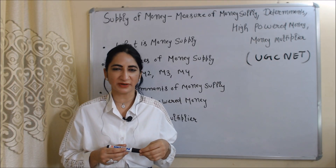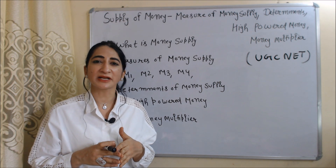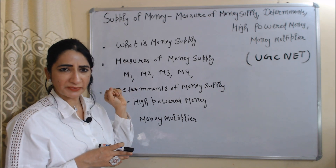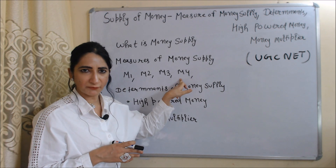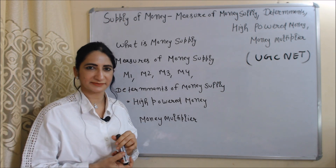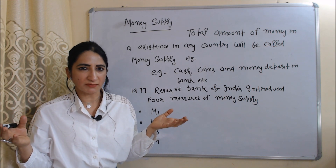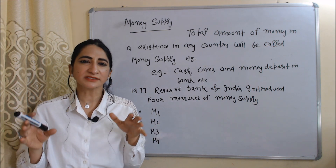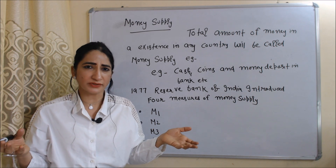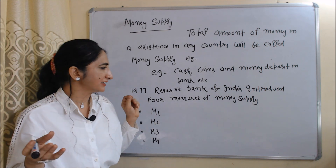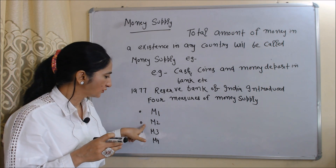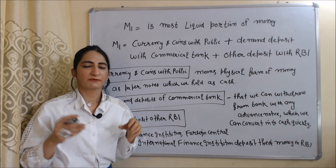Hello everyone, my name is Minni Sati. I hope you all are staying healthy. Today we are going to talk about supply of money for UGC NET. Topics for today's video are: what is money supply, measures of money supply like M1, M2, M3 and M4, and determinants of money supply. In 1977, Reserve Bank of India introduced four measures of money supply: M1, M2, M3 and M4.